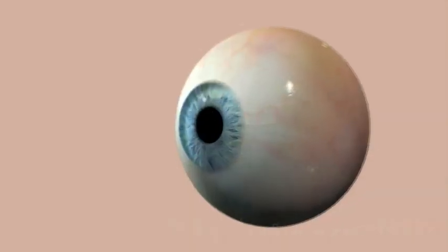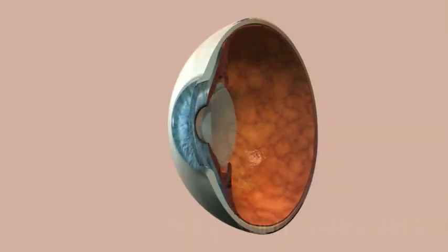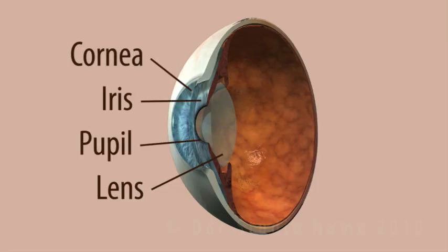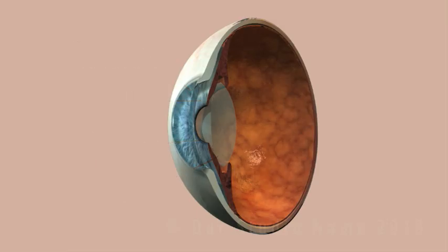A cataract is the clouding of the eye's natural lens, a structure which is positioned behind the cornea, iris, and pupil. Like the glass lens of a camera, our lens adjusts to focus our vision.